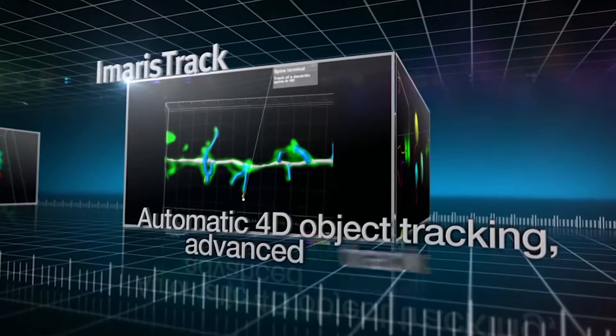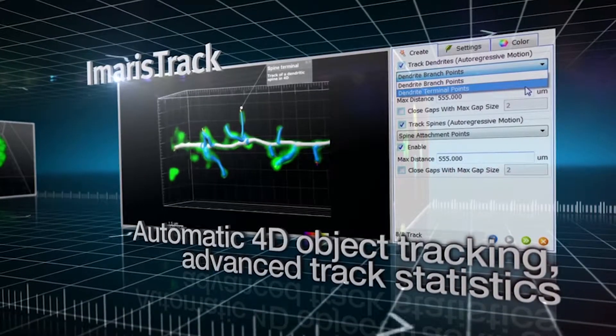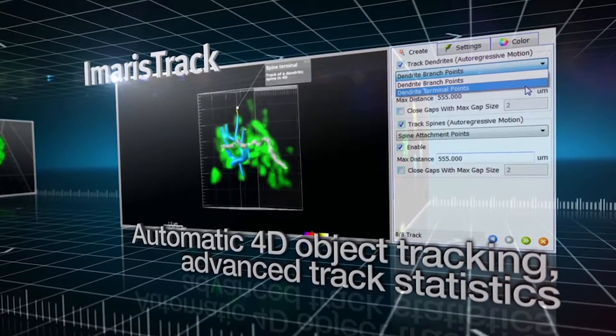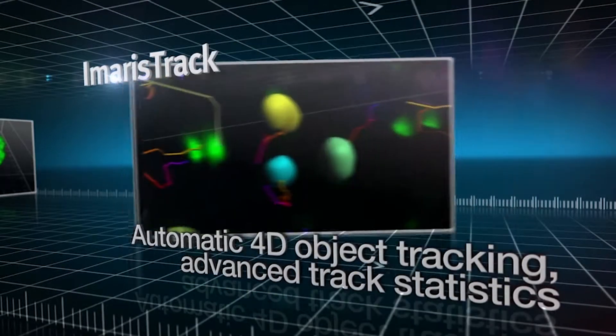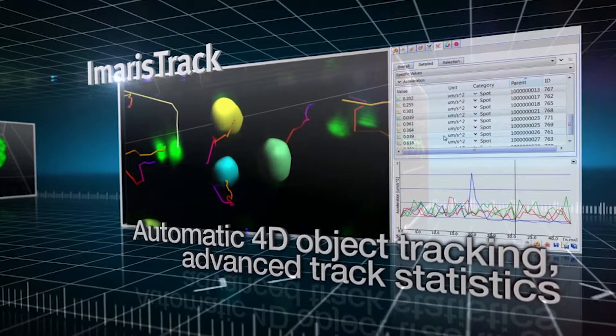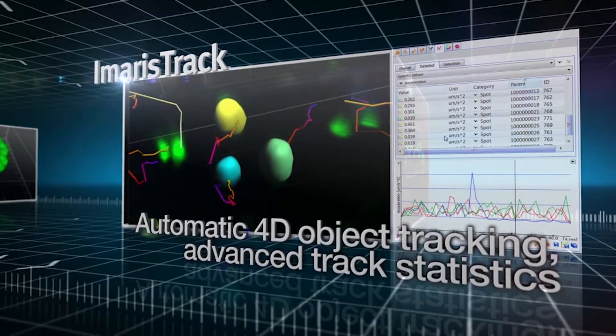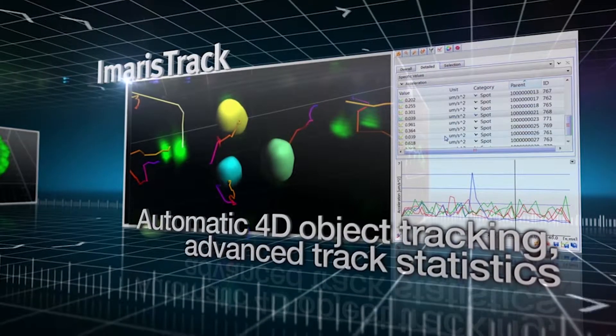Imaris Track is the cutting-edge scientific solution for 3D and 4D object tracking. Monitor, visualize and quantify rapid temporal changes in complex biological systems. Imaris Track lets you tackle challenging processes like dendritic spine modifications and intracellular traffic events.